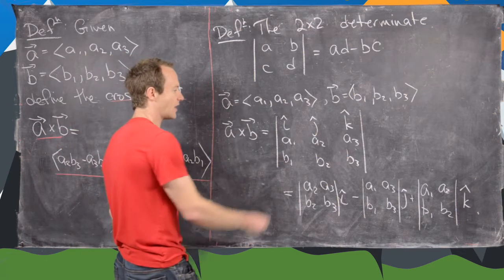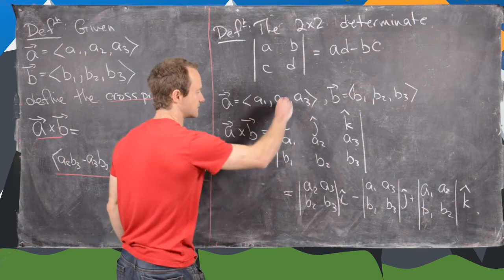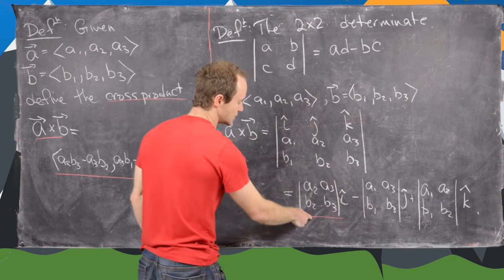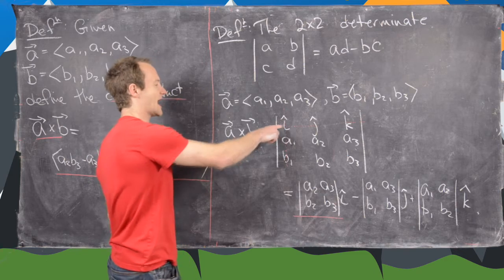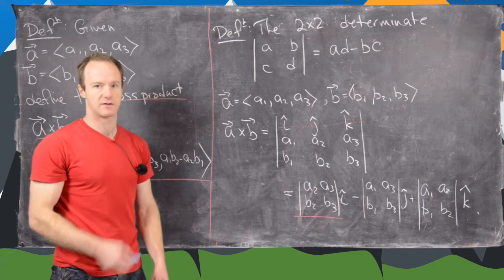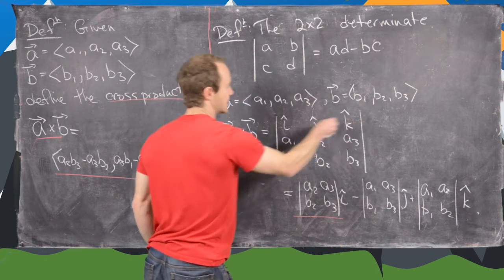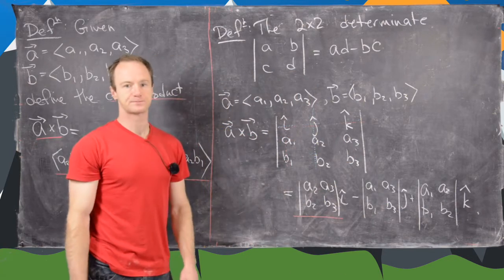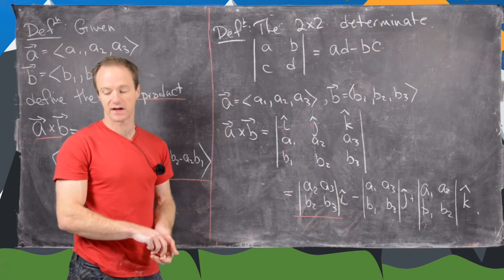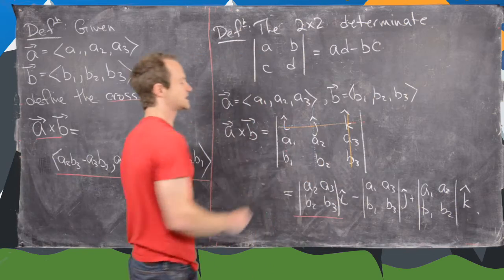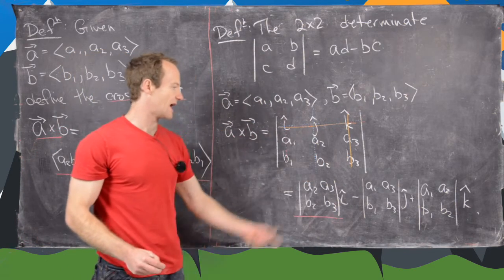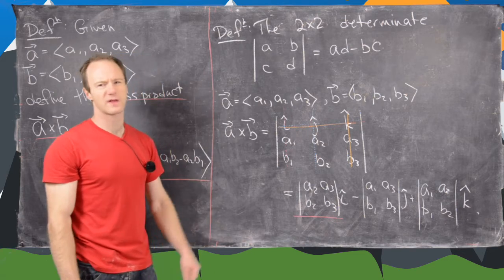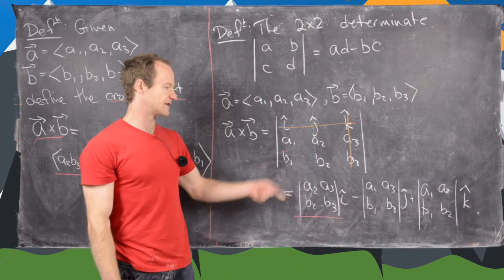To expand the 3×3 determinant, cross out the first row and first column — that intersection is i — and take the determinant of the leftover 2×2 matrix multiplied by i. Next, cross out the first row and second column — that intersection is j — take the determinant of the remaining 2×2 matrix, but this term gets a minus sign. Finally, cross out the first row and last column — intersection is k — take that 2×2 determinant in the k direction. This formula is easier to remember than the original definition.